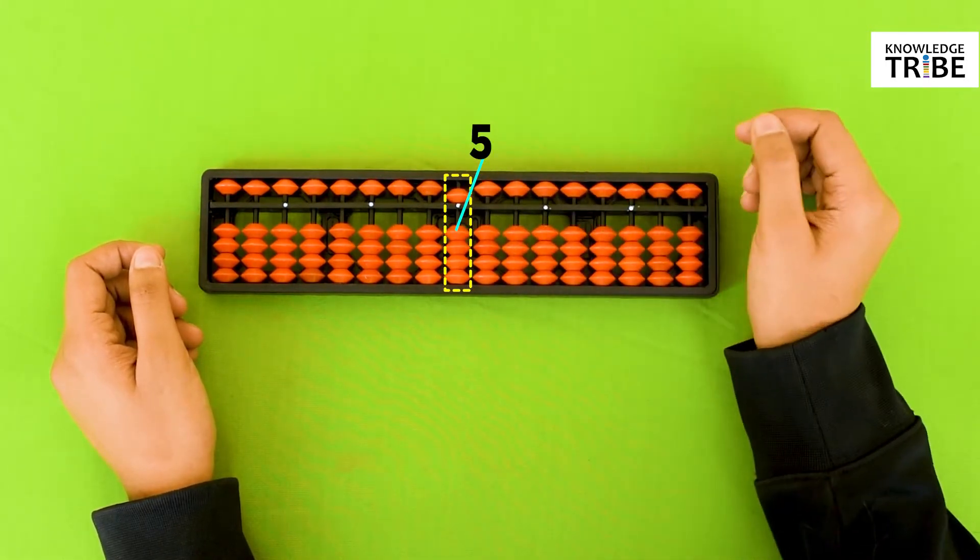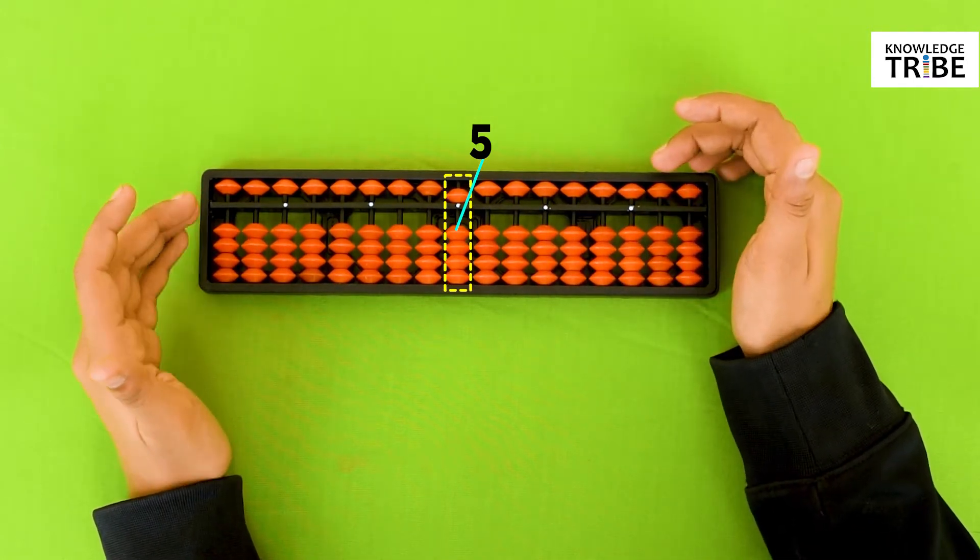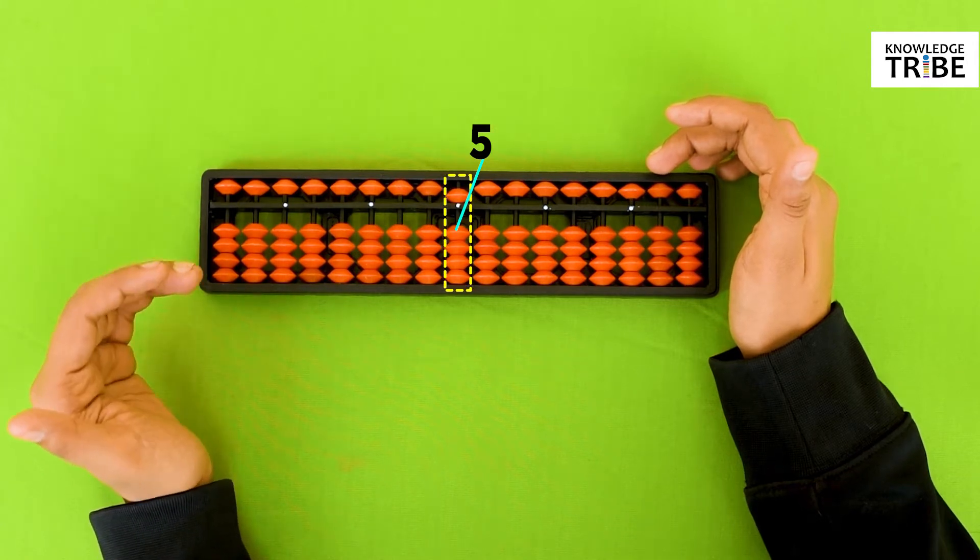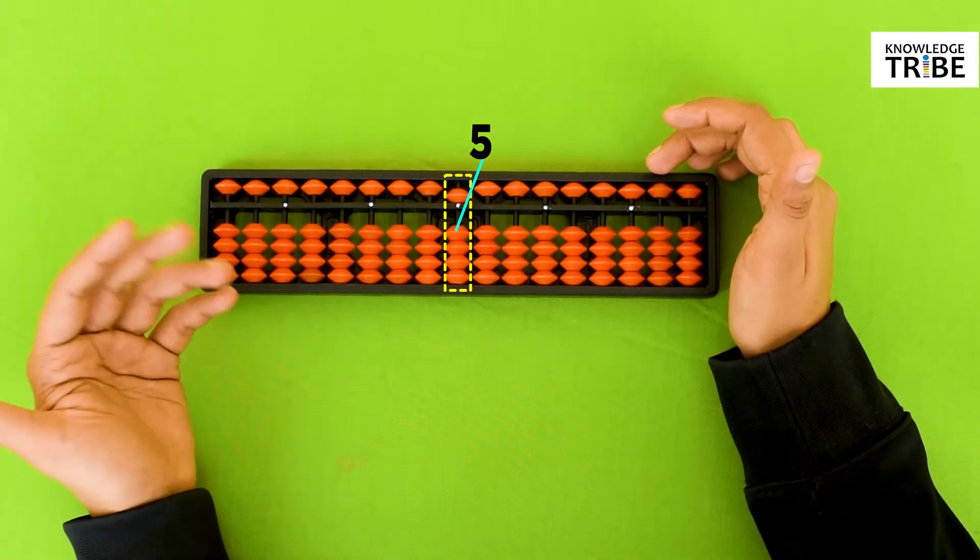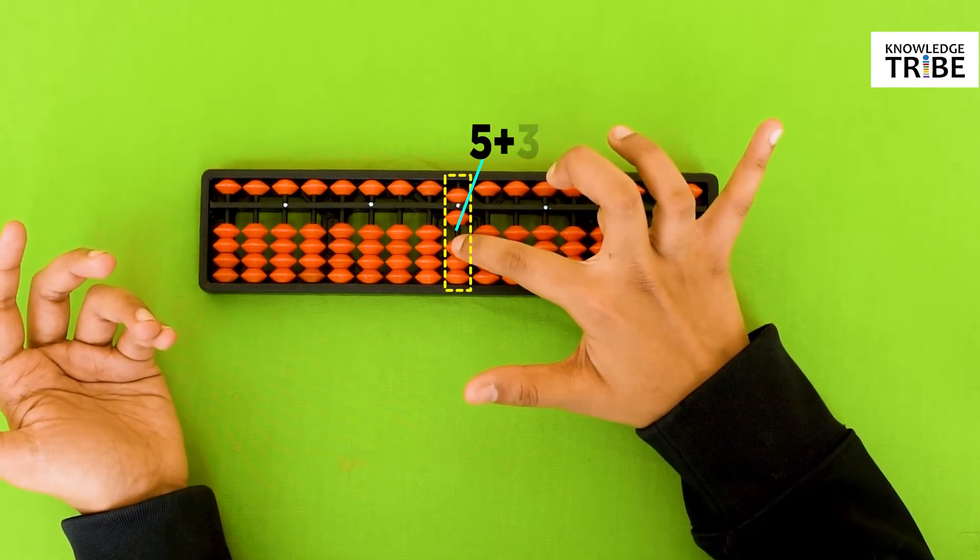We will bring one heavenly bead towards the center beam. In order to add 5 and to add 3, we will move 3 earthly beads towards the center beam. 1, 2, 3.